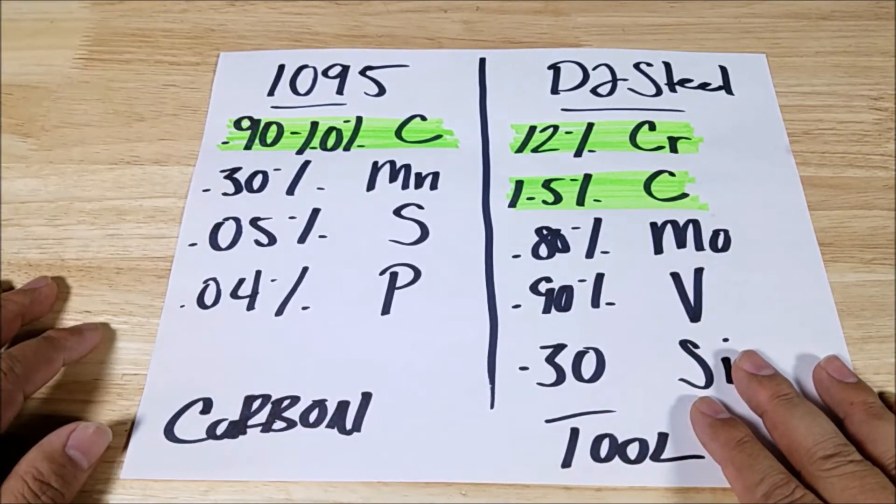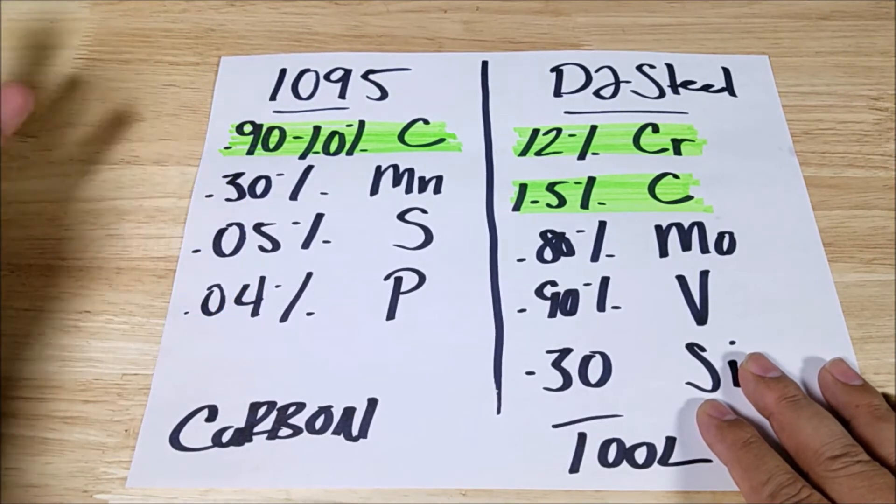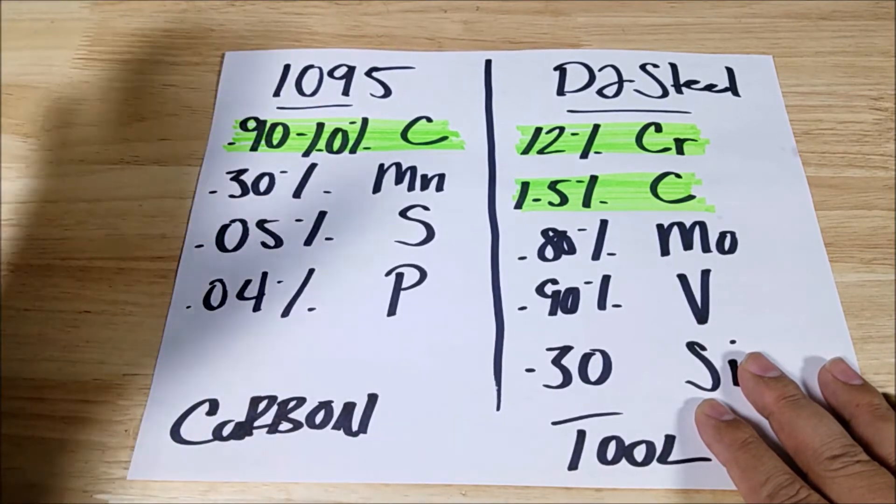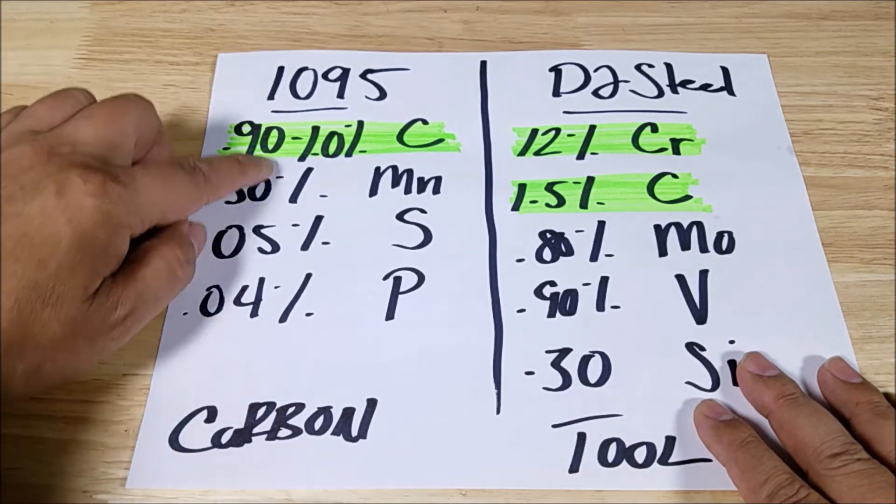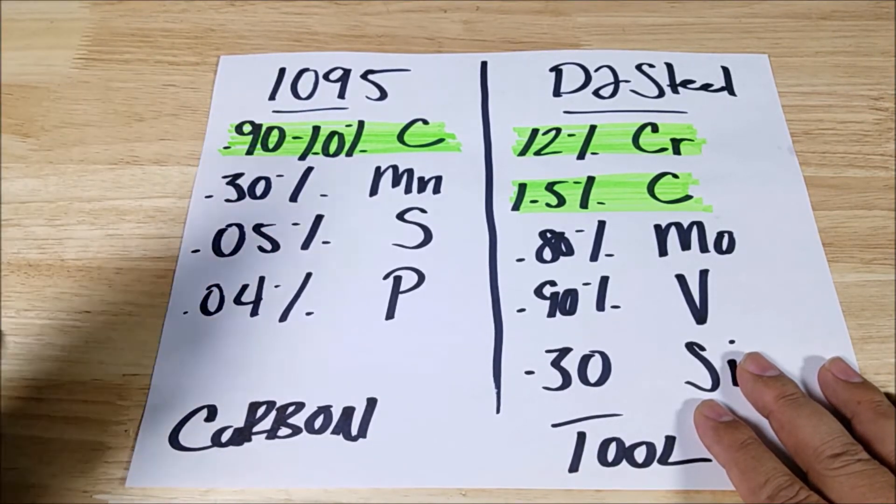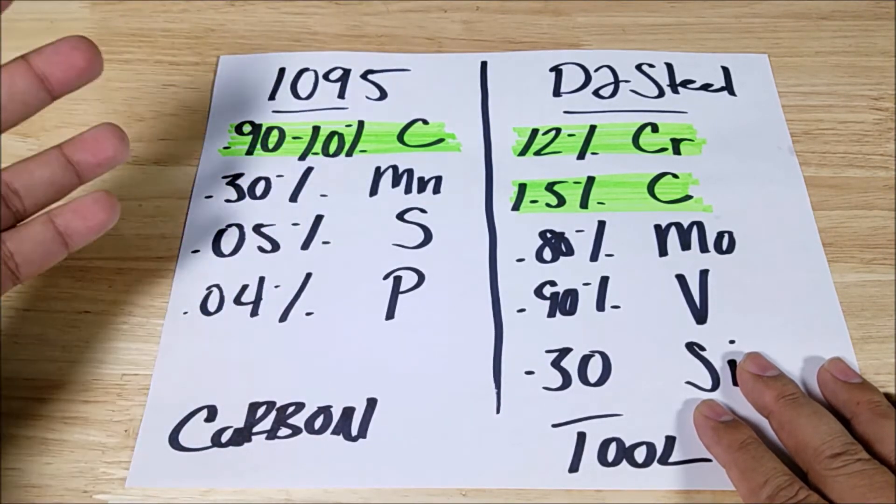Pretty easy carbon, high carbon stuff. If it's above, I would say 0.45% is going to be high carbon. So 1095 has like 0.90 to 1.0% carbon in it. So that's going to be high carbon. No chromium in here. So not very rust resistant. For those people that have those survival knives, they keep them really clean or they coat them with something. But those type of knives with high carbon, they rust a lot.